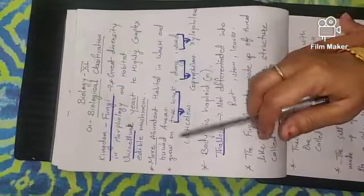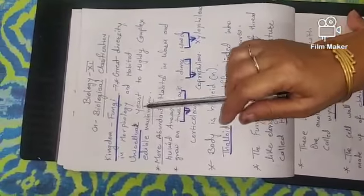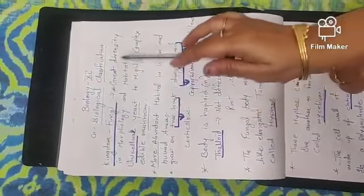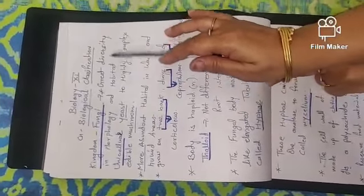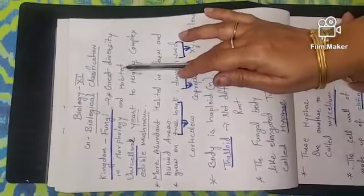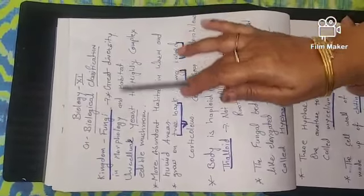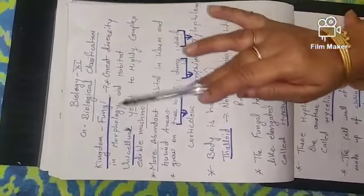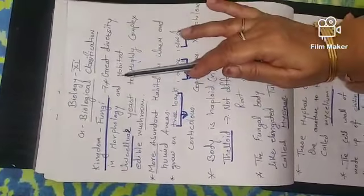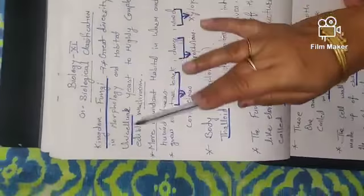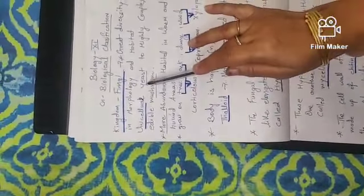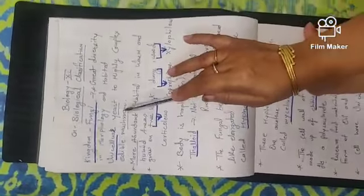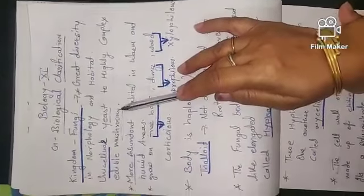Hello students, last time we done Kingdom Protista, so now we start with Kingdom Fungi. Fungus has great diversity in morphology and habitat. This diversity ranges from unicellular yeast to highly complex edible mushrooms, so there is great diversity in morphology and habitat.